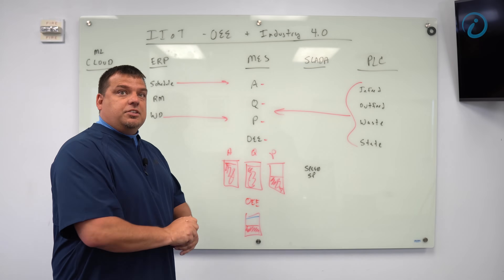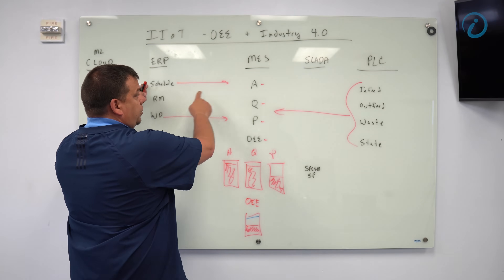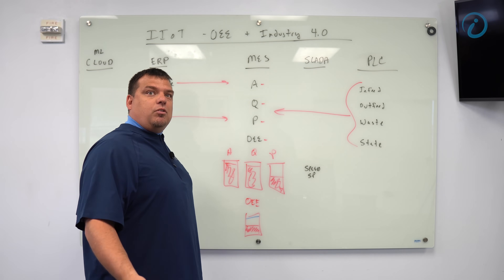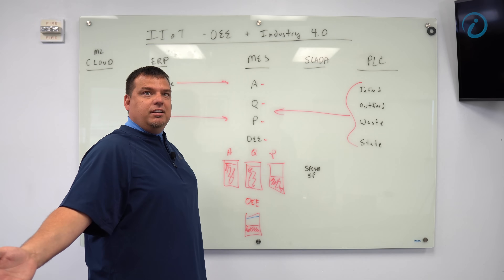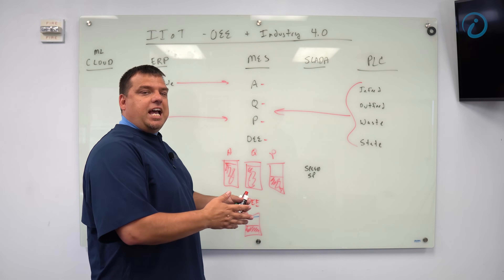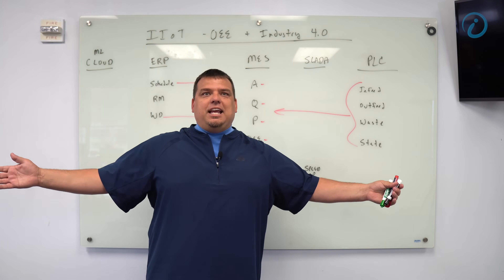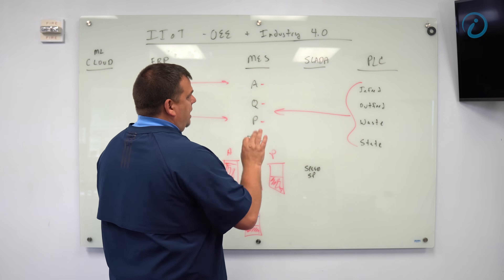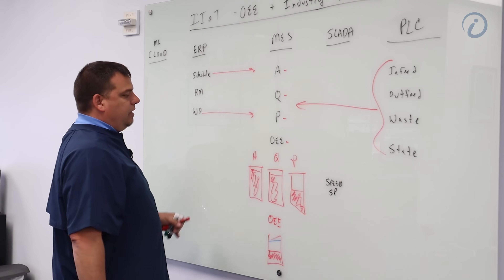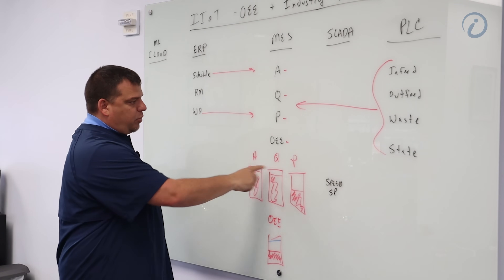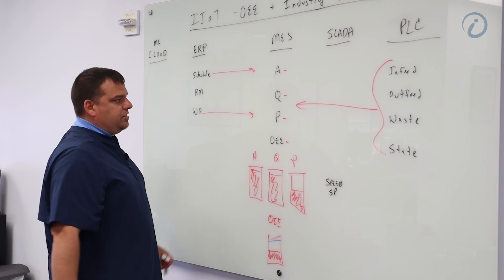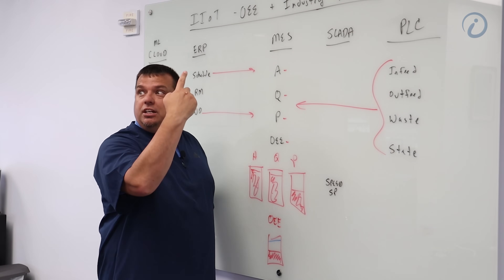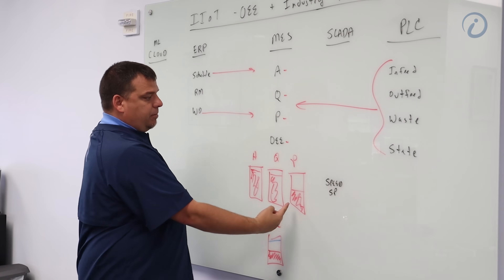What does that tell the operator? It tells the operator that whatever we scheduled this work order for, we're going to be late. And it doesn't only impact that work order — it impacts the delivery of everything. In the Industry 3.0 methodology, the operator sees the dashboard, sees his OEE is low.